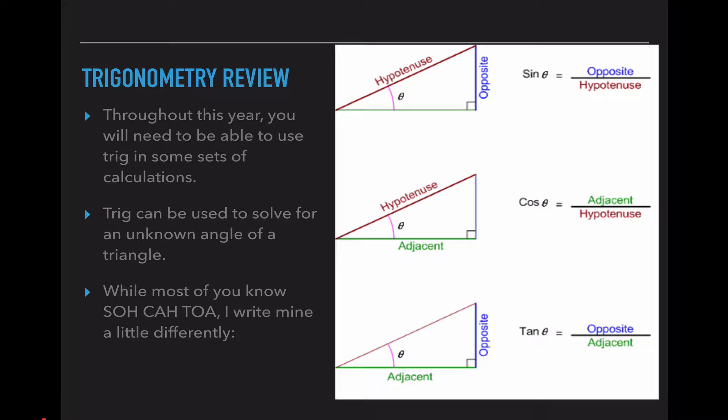And while most of you know the SOHCAHTOA acronyms, I write mine slightly differently. So instead of writing it like your math teachers may have taught you, I write mine like this. And the reason for it is because it reminds me that when we mathematically rearrange these equations, it is not just straight multiplication. This reminds me that opposite is divided by the hypotenuse. This reminds me that adjacent is divided by the hypotenuse.